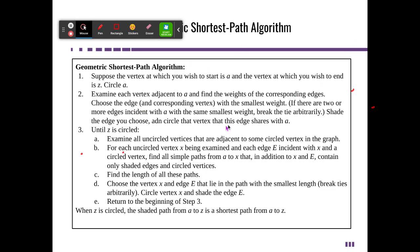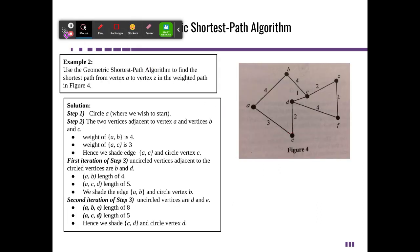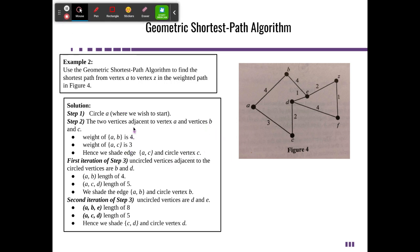Geometric shortest path algorithm. These steps will walk through, so you can read those yourself. Let's say we wanted to find the shortest path between A and Z. The first thing we're going to do is circle A. That's where we wish to start. Then we look for the two vertices adjacent to A, so those adjacent vertices are B and C. The weight of AB is four and the weight of AC is three. We're going to shade AC and circle C because that's our shortest route between those two adjacent vertices.